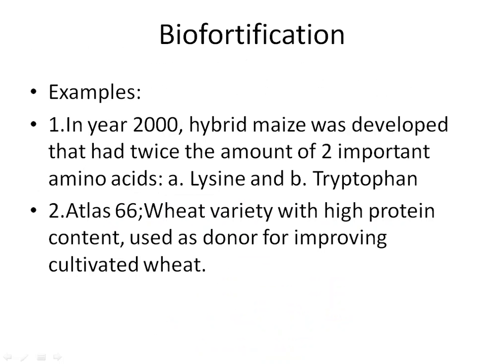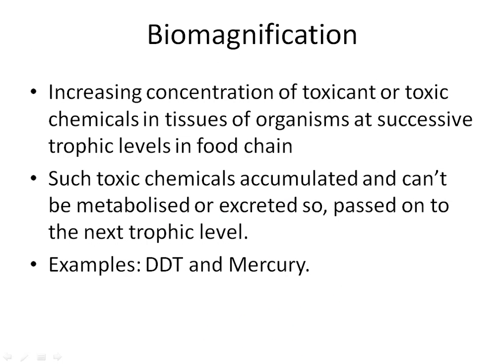Examples include: in year 2000, hybrid maize was developed that had twice the amount of two important amino acids — lysine and tryptophan. A second example is Atlas 66, a wheat variety with high protein content, used as a donor for improving cultivated wheat.